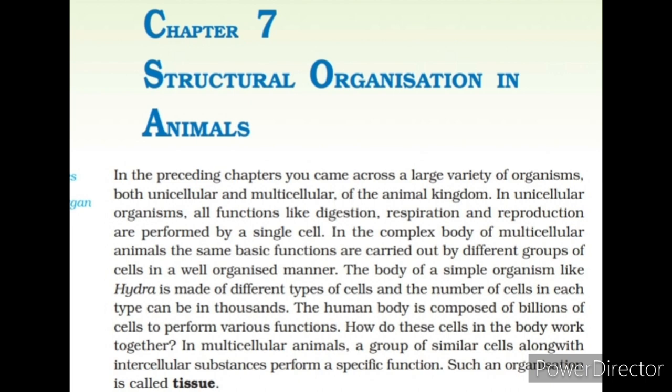The body of a simple organism like hydra is made of different types of cells and the number of cells in each type can be in thousands. The human body is composed of billions of cells to perform various functions. In multicellular animals, a group of similar cells along with intercellular substances perform a specific function. Such an organization is called tissue.